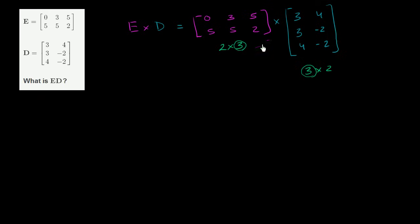But let's actually work this out. So what we're going to get is actually going to be a 2 by 2 matrix. But I'm going to create some space here because we're going to have to do some computation. So this is going to be equal to, I'm going to make a huge 2 by 2 matrix here.